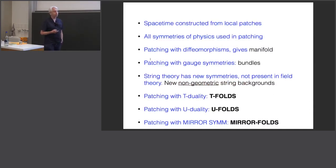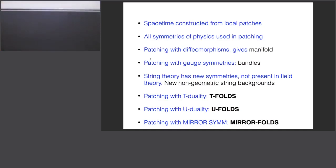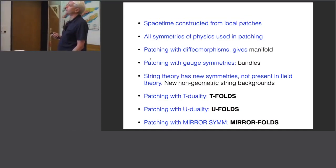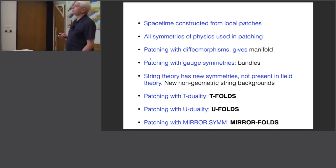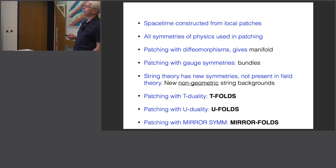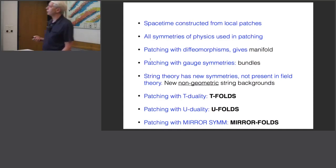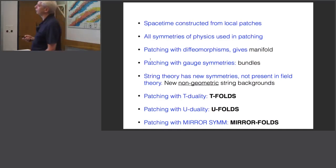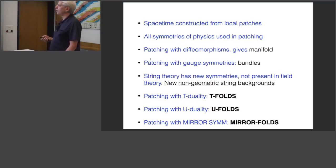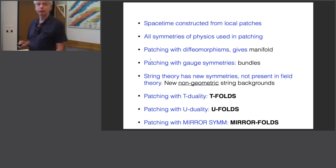The way they're going to play a role is through their interaction with the geometry. We think about space-time as being constructed from local patches, and in principle all symmetries of the physics could be used in gluing these together. The familiar stories are using diffeomorphisms to construct a manifold and using gauge symmetries to construct bundles. The dualities allow the construction of new kinds of backgrounds, because using these symmetries in the patching constructs new kinds of structures — the name 'non-geometric' has become attached to them, although it's a particularly misleading name. Patching with T-duality gives T-folds, with U-duality U-folds, and with mirror symmetry mirror folds.